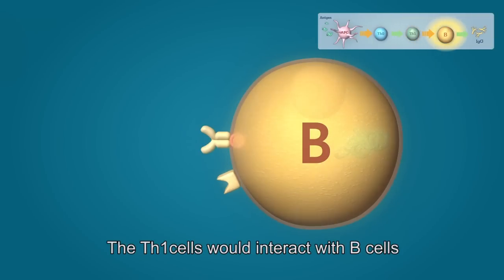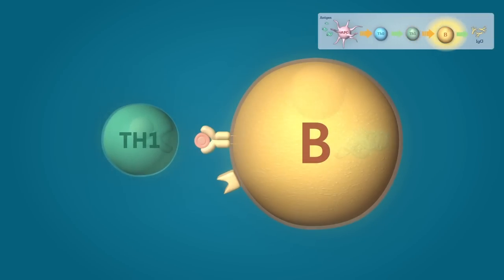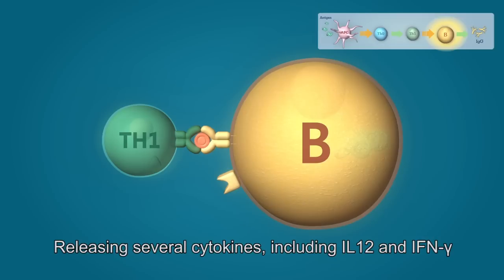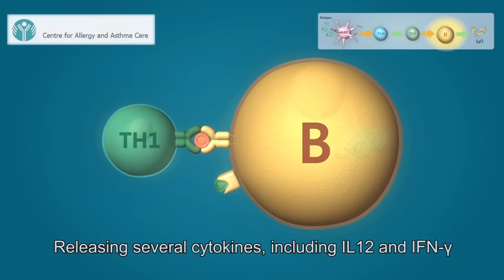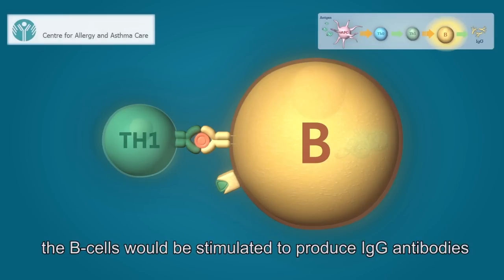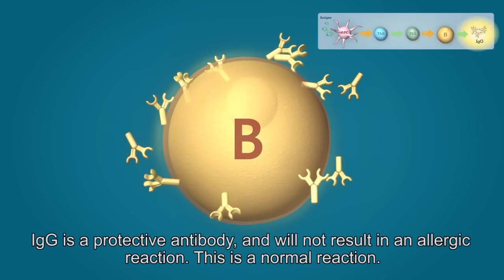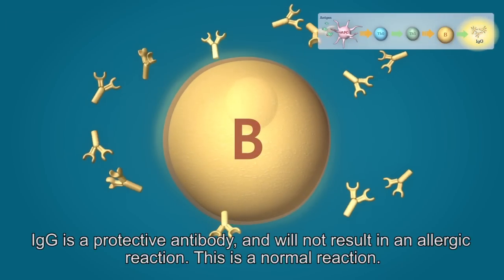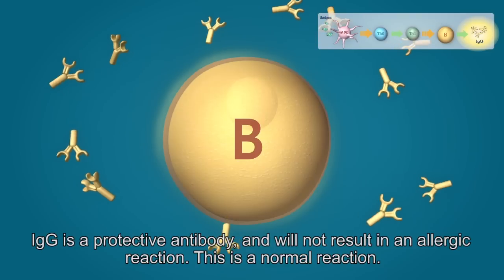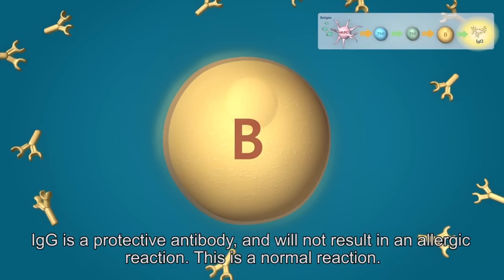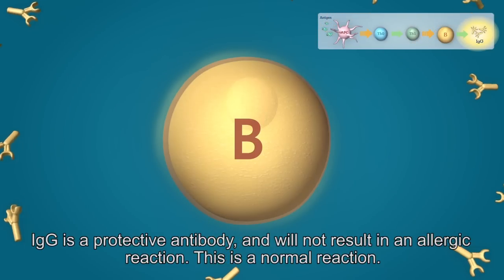The Th1 cells would interact with B cells, releasing several cytokines, including interleukin-12 and interferon gamma, and the B cells would be stimulated to produce IgG antibodies. IgG antibody is a protective antibody, and will not result in an allergic reaction. This is a normal reaction.